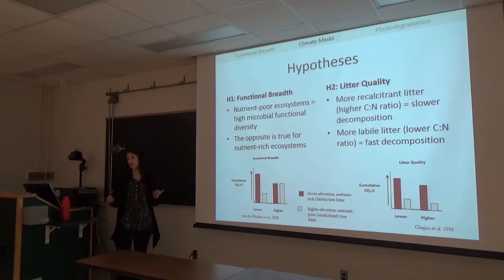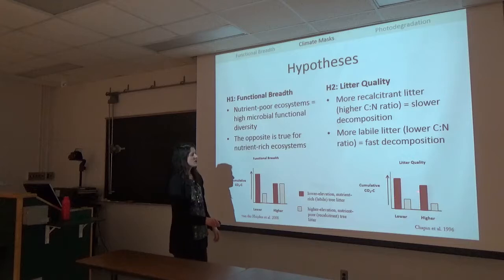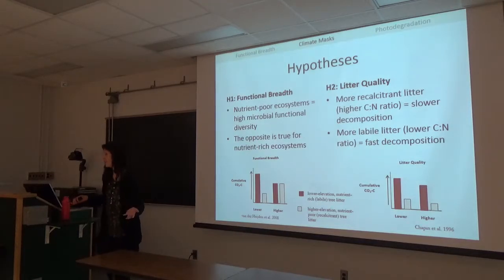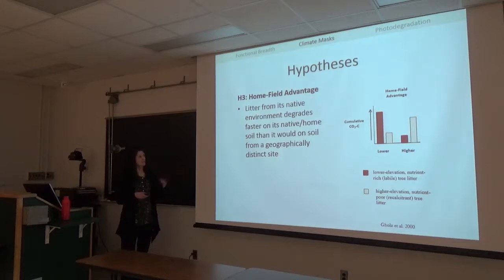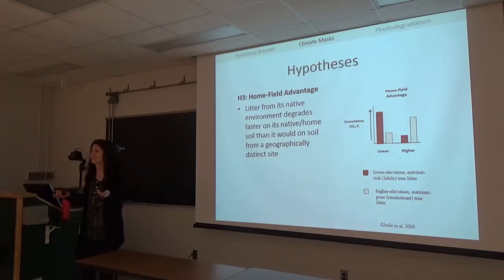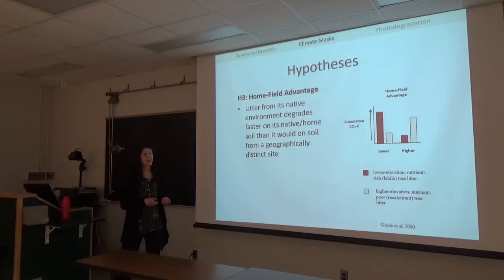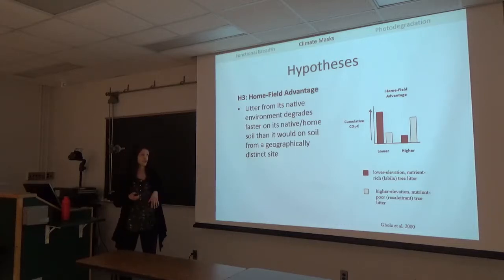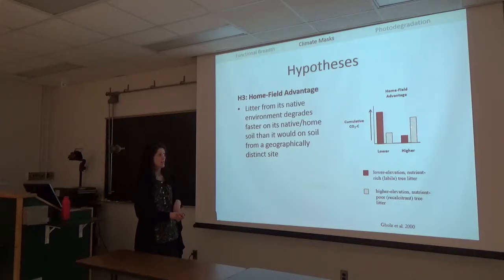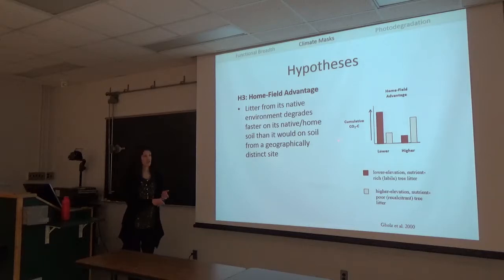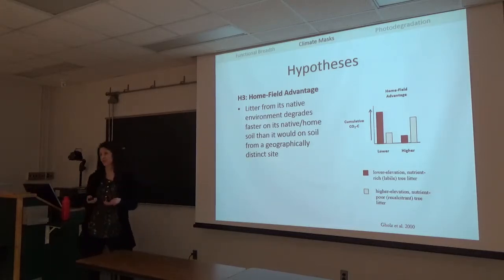Home field advantage is pulled from the sports literature—sports teams perform better at home than away—and has been applied to litter decomposition to suggest local adaptation of soil communities to their home litter environment. So the recalcitrant litter from the high elevation site would decompose much faster under its home community than the labile litter, and vice versa. These are three distinct abiotic and biotic factors all potentially coming into play with decomposer effects.